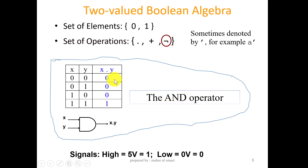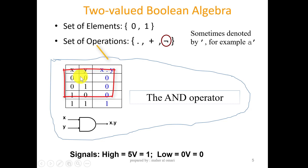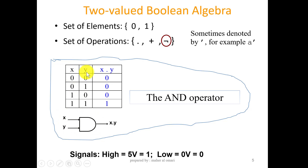The first operator is the AND operator. This is the truth table for the AND operator. It is a binary operator, so it has two inputs X and Y, and a single output, X ANDed with Y. Anything you AND with zero is zero, and the output is one only if both inputs are one. This is represented in digital circuits as an AND gate, with inputs X and Y and the output. Logic one here is the high voltage, which is five volts, and logic zero is the low voltage, which is zero volts.